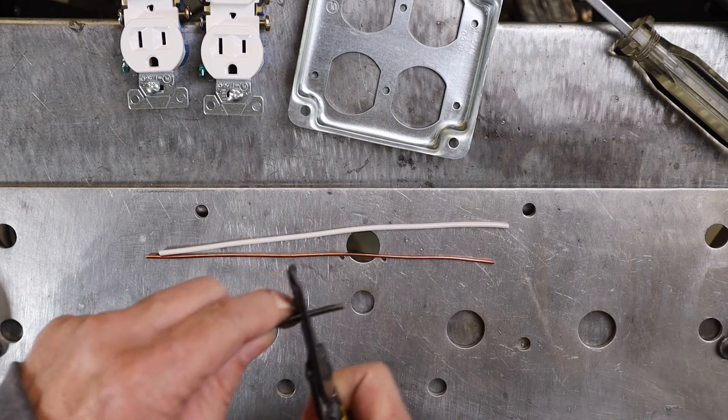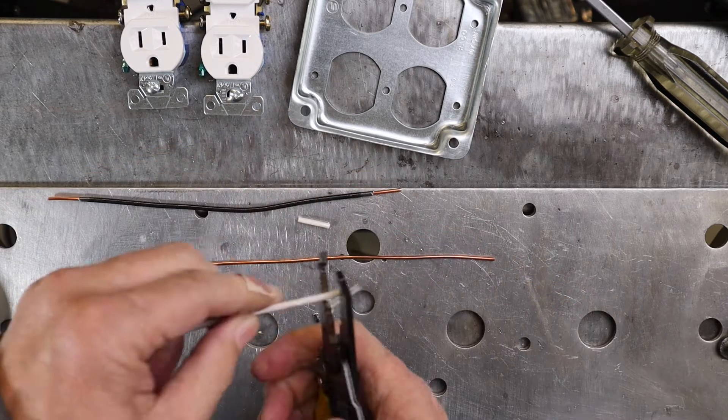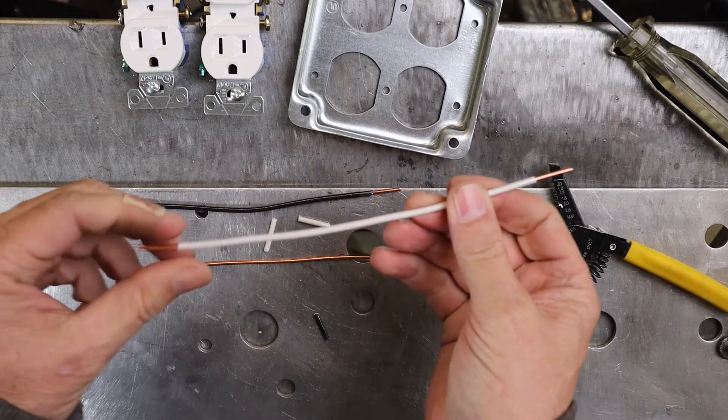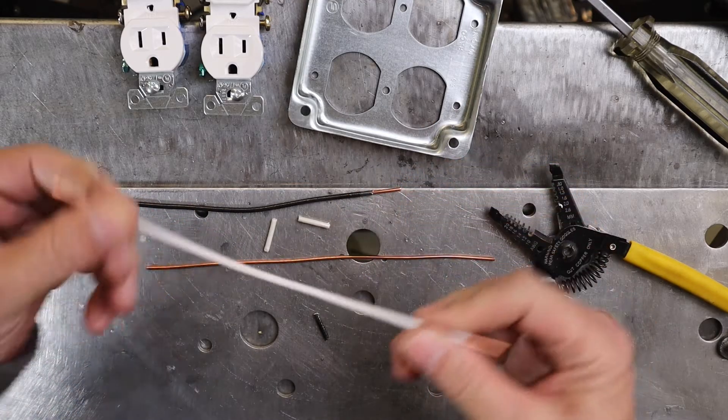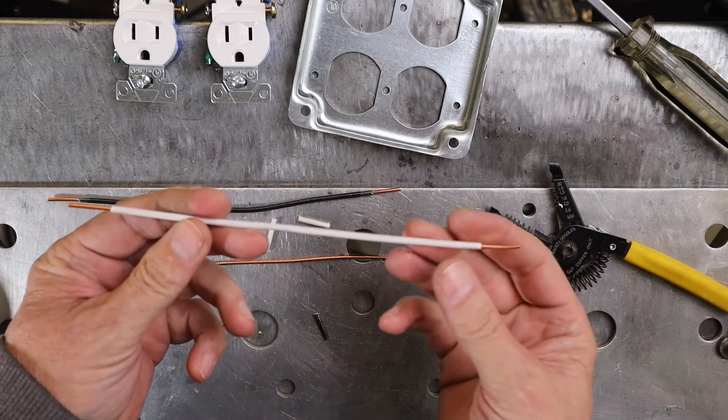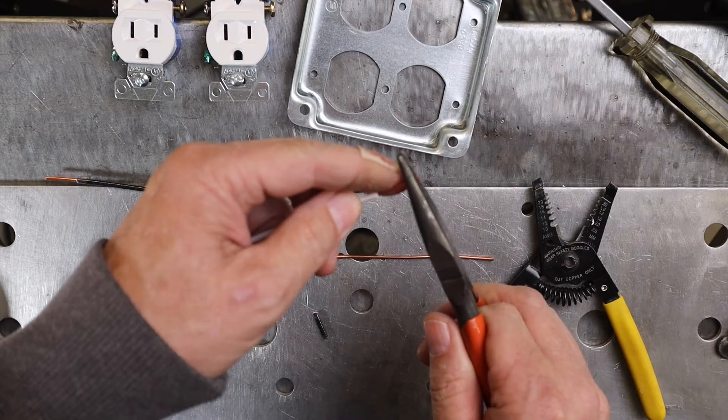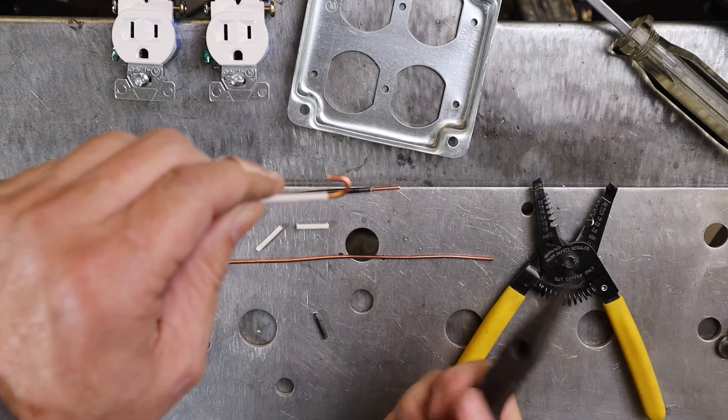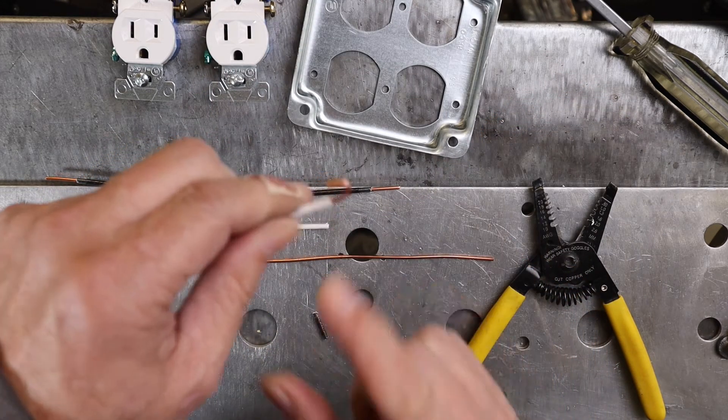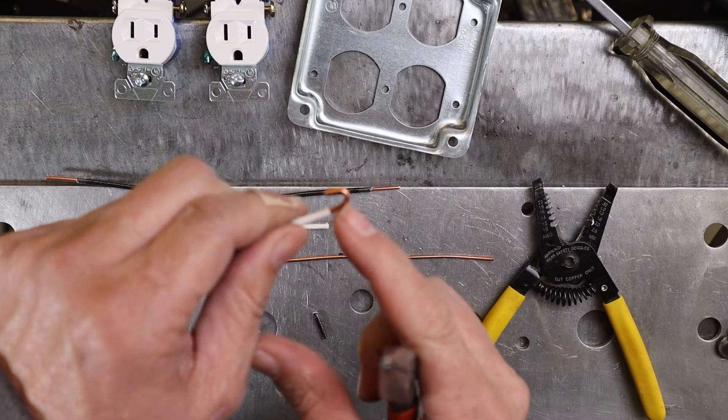You want to strip enough of the insulation so that when you make the hook, there's no insulation going to be incorporated into that hook. As you tighten it under that screw, the screw is tightening down just on the copper, not on the insulation. Then I'll take one end of each one of those and bend a hook into it. Here's where you got to be real careful: if you don't strip enough, you don't want that insulation coming up here into the hook where that screw is.